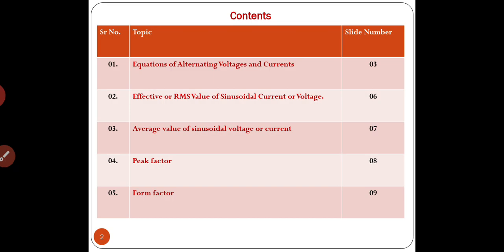Equations of alternating voltages and currents — here you will understand what alternating voltage and current is and how it is represented in the form of equations. For effective or RMS value of sinusoidal current or voltage, we have to calculate the root mean square value of the particular sinusoidal waveform.